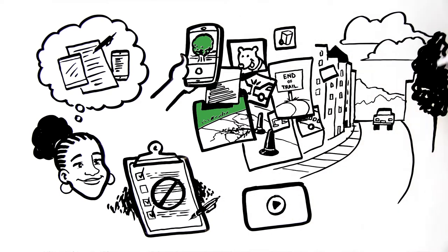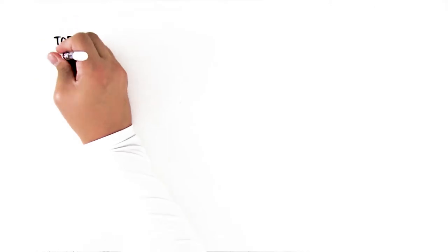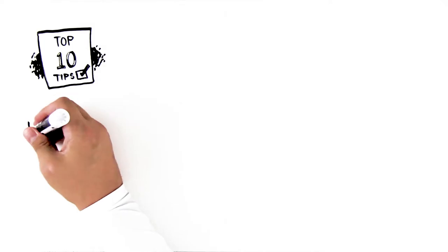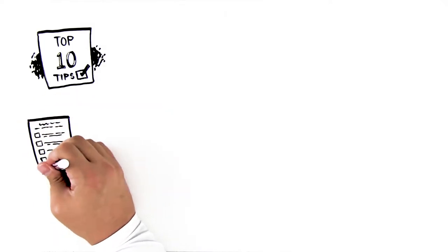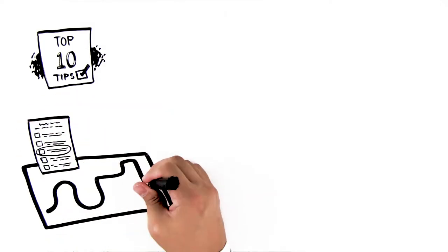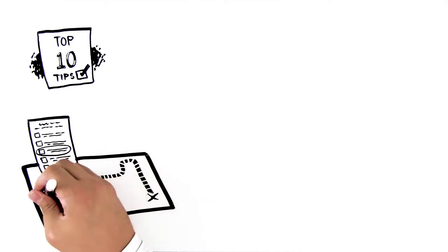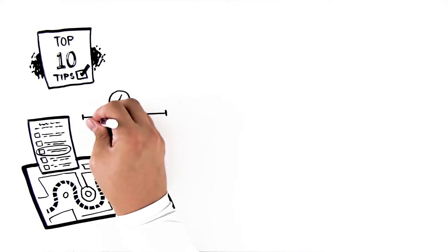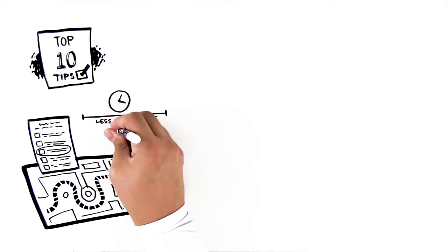Point is, a walk audit can take many different forms. Here are the top 10 tips for planning and leading a successful one. Decide what you want to accomplish. Choose the route carefully, scout it ahead of time, and make sure everyone will be safe. Don't make it too long. A one-mile walk audit can easily last an hour with stops for discussion.